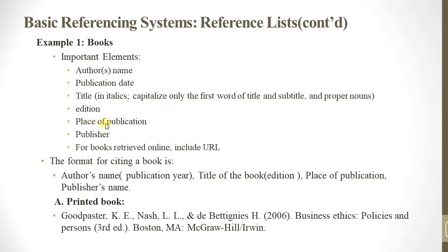Additional book citation elements include: place of publication and publisher. For books, also note the edition and illustrator if applicable, and the URL if it is an online source. The format for citing a book is: author's name, publication year, title of book, edition, place of publication, publisher's name.